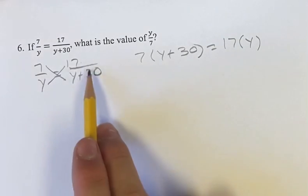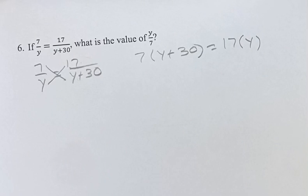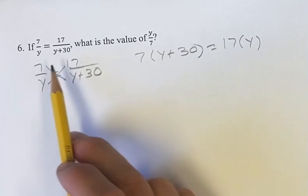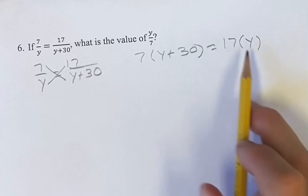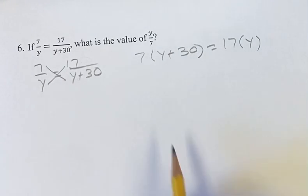What this is doing is this is basically taking a couple of steps out of the process where you would be finding a common denominator and canceling things. This is where it would take you anyways. So now we have this equation, it's going to be a lot easier to solve for y.